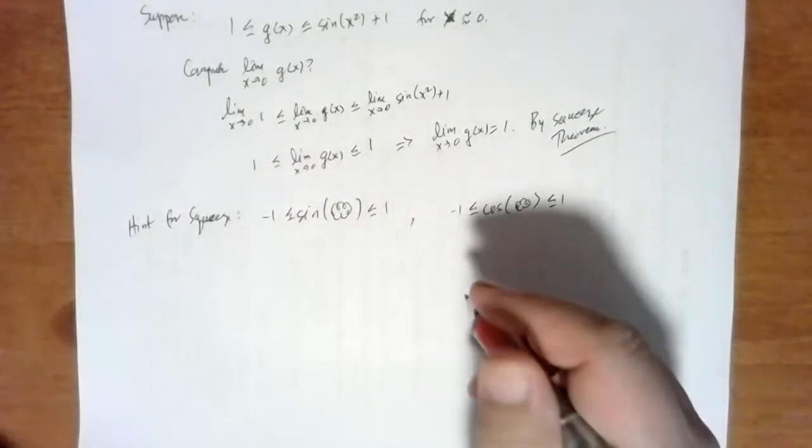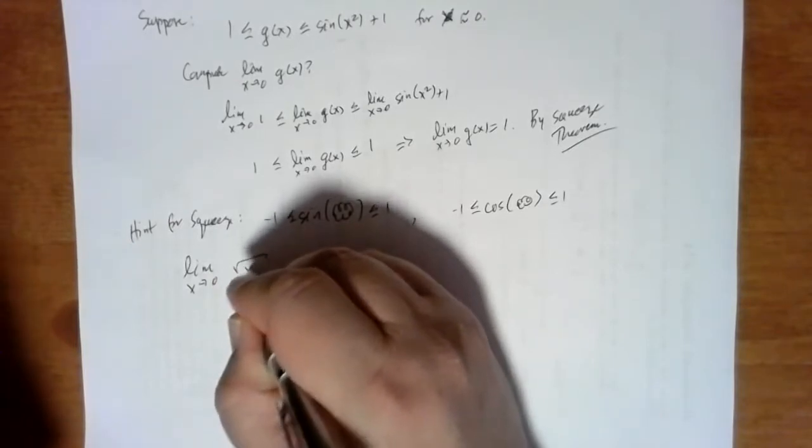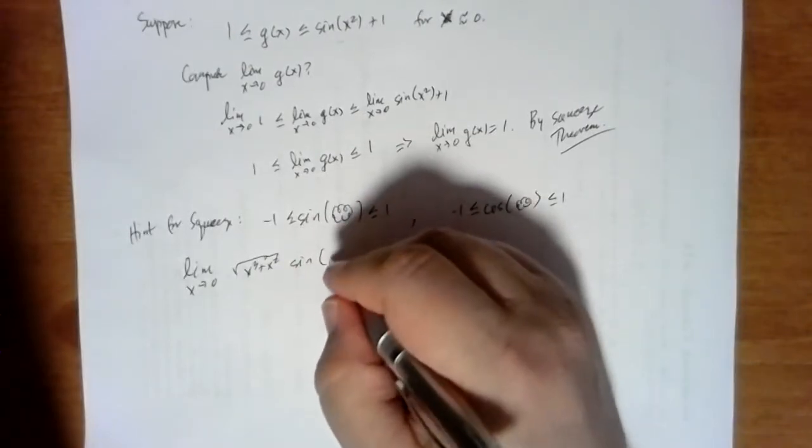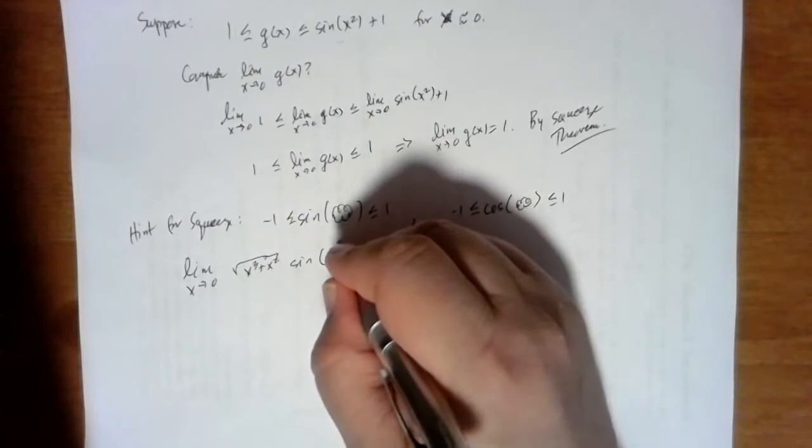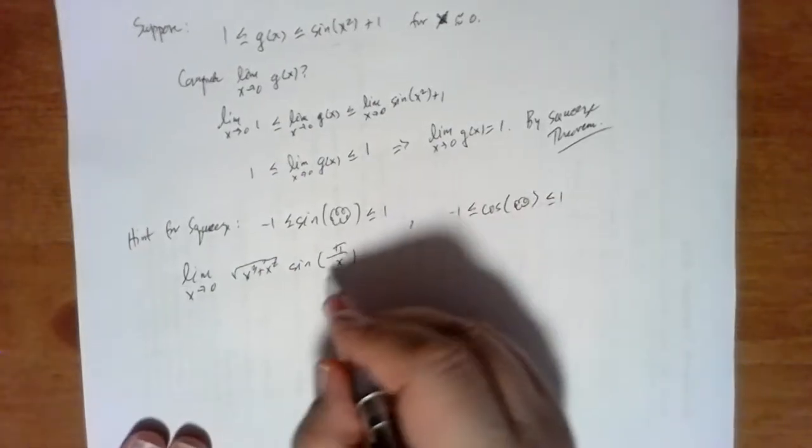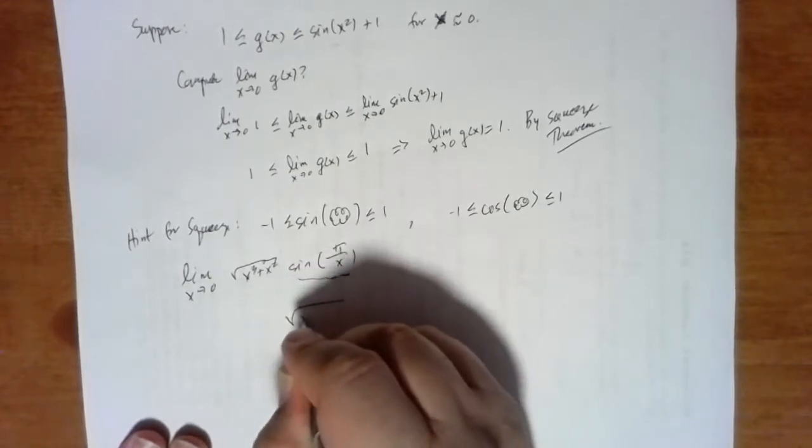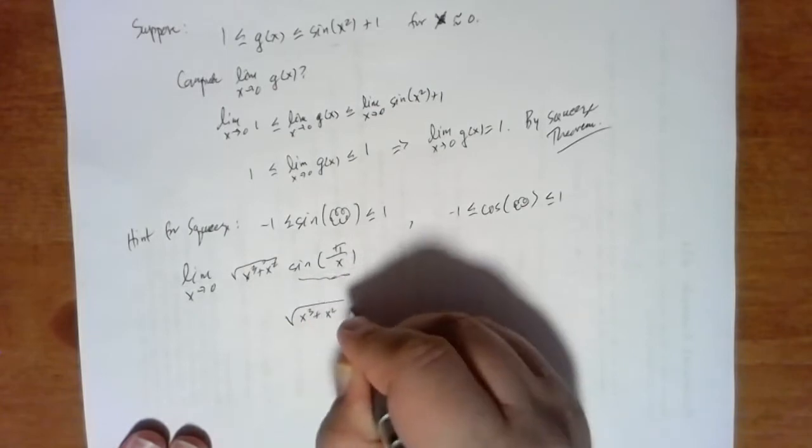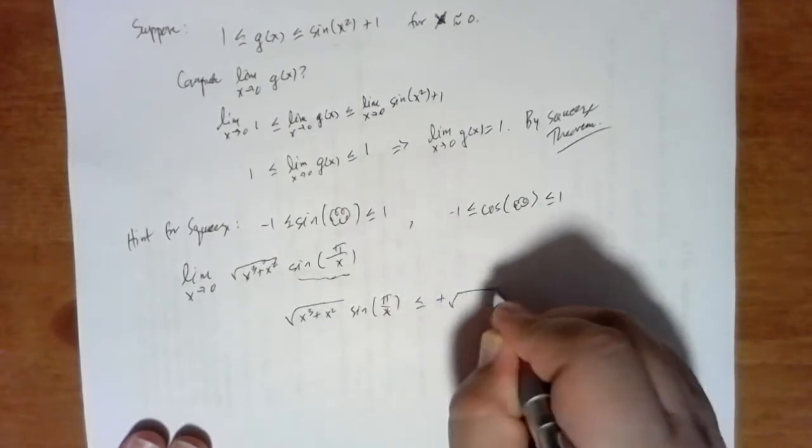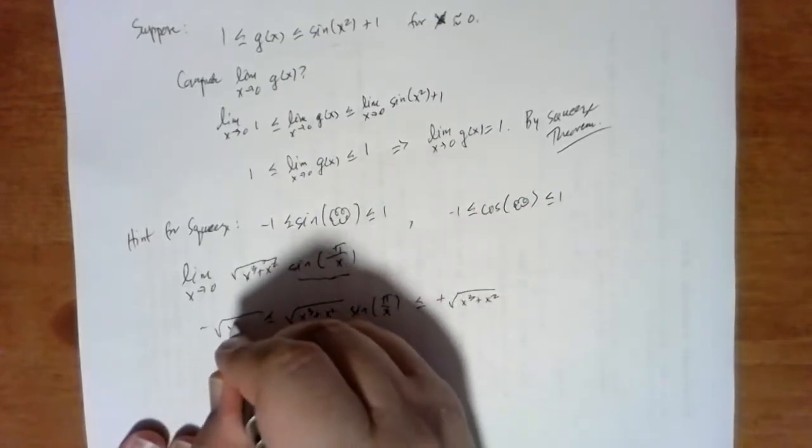How about something like the limit as x approaches 0 of x squared times the sine of pi over x. And you see here, remember the sine of anything is stuck between minus 1 and 1. And so this function right here, the square root of x cubed plus x squared sine of pi over x, is stuck between plus the square root of x cubed plus x squared.